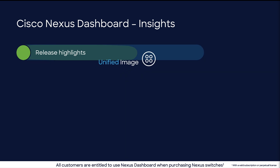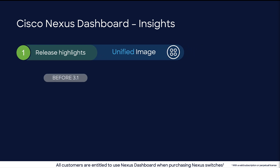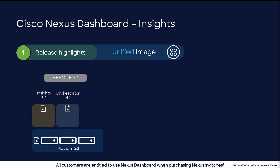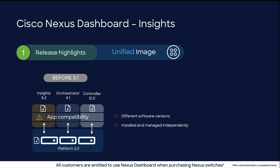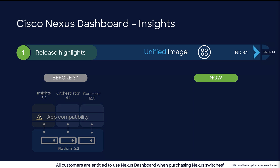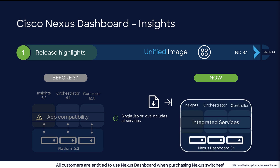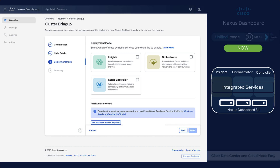One, Unified Image. Before, Nexus Dashboard required you to have a platform version — for example 2.3 — and then you would download apps independently. Each app, such as Insights, Orchestrator or Fabric Controller, would carry a different version. This would often translate into a software compatibility nightmare. Now, with version 3.1, you just download one Nexus Dashboard ISO or OVA file for either physical or virtual appliances, and it comes with everything you need. You just need to select the services you want to enable, and you're done.